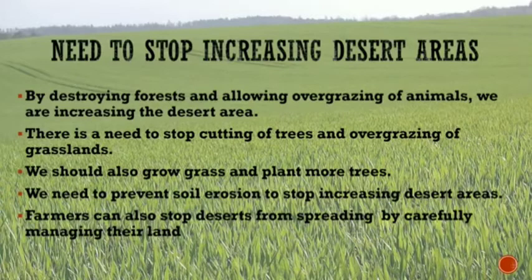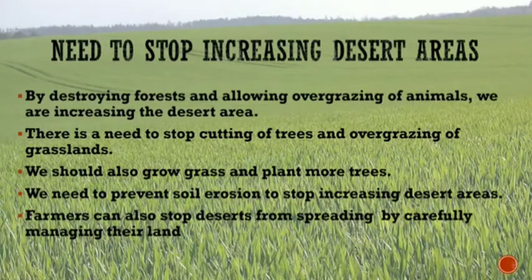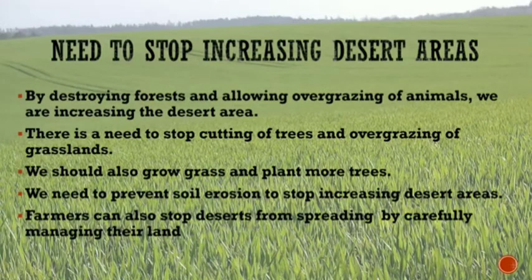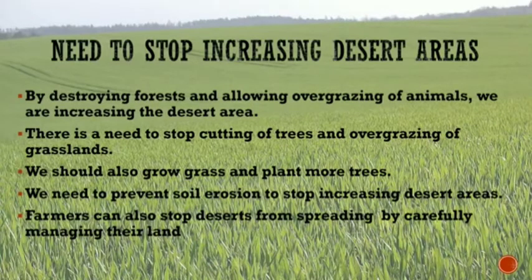Next, children, we are going to see why we need to stop increasing desert areas. By destroying forests and allowing overgrazing of animals, we are increasing the desert area. There is a need to stop cutting of trees and overgrazing of grasslands. We should also grow grass and plant more trees. We need to prevent soil erosion to stop increasing desert areas. Farmers can also stop the desert from spreading by carefully managing their land. It is each one of our responsibility to protect the grassland and plant more trees.